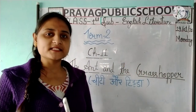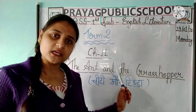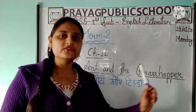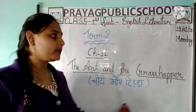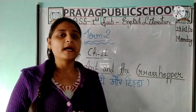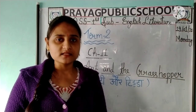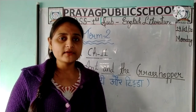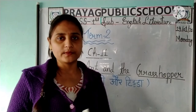Aaj hum pen paper test ki chapter ko start karne ja rahe hain. Term 2 ke pen paper test mein sirf ek hi chapter hai — that is Chapter Number 11. Use hum aaj start karne ja rahe hain. The name of the chapter is 'The Ant and the Grasshopper.' Now everyone open your book, Chapter Number 11, The Ant and the Grasshopper.